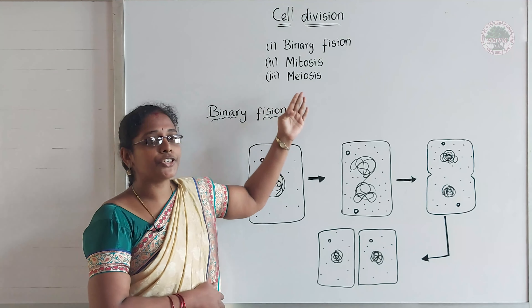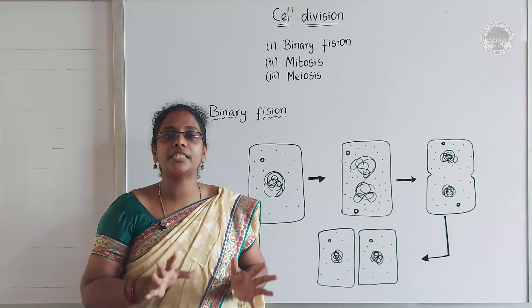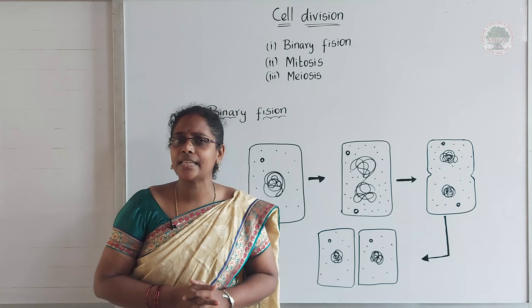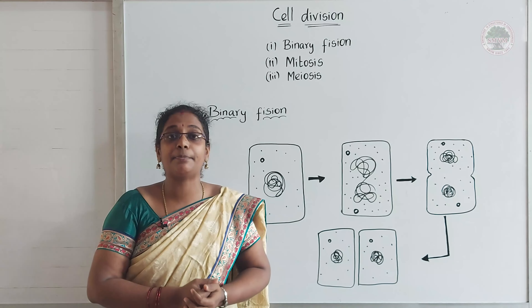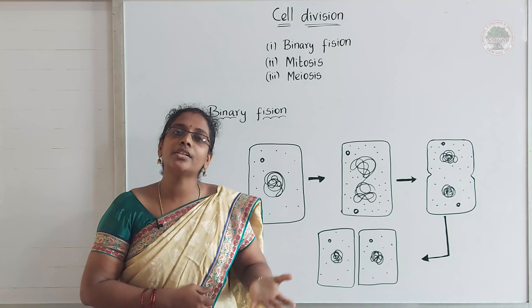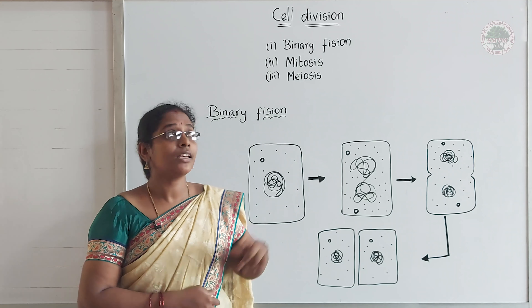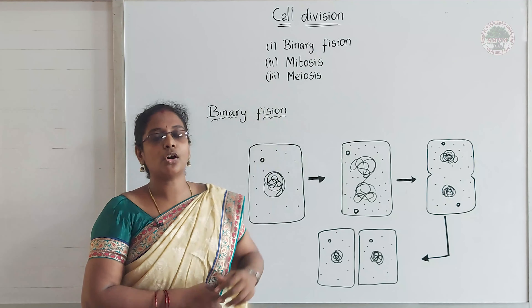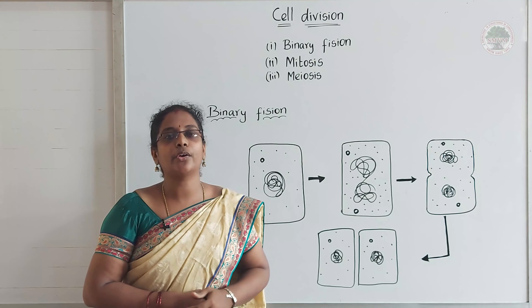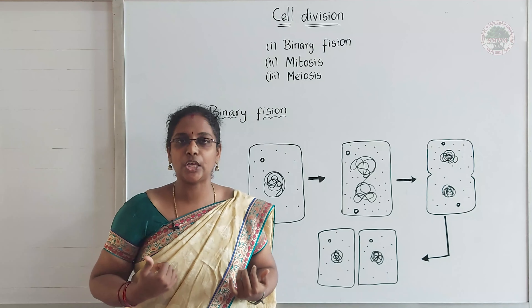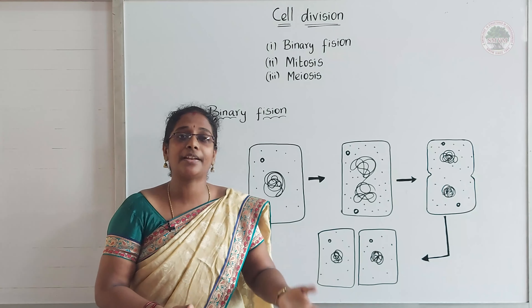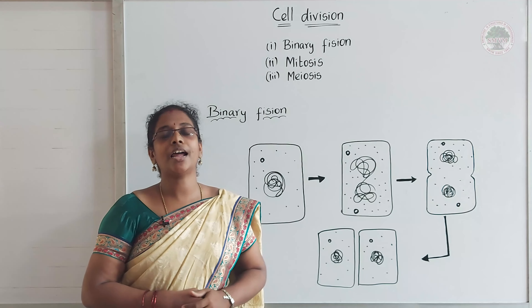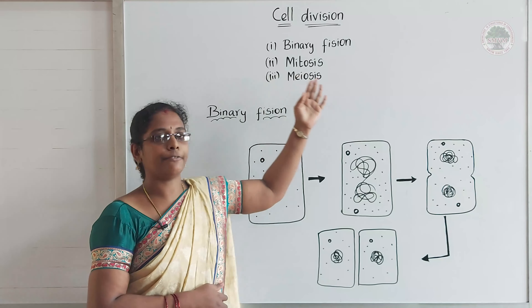Binary fission cell division mostly happens in prokaryotic cells — primitive cells like bacteria, for example. The other two, mitosis and meiosis, happen in eukaryotic cells, which means us: humans, animals, other organisms, and even plants. Everything comes under eukaryotic organisms. So first, we are going to discuss about binary fission.